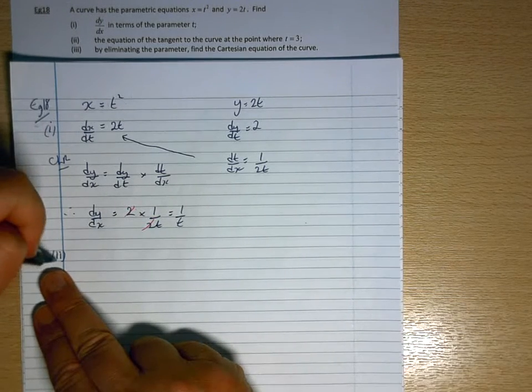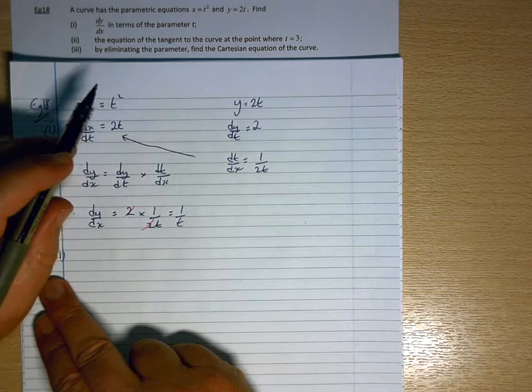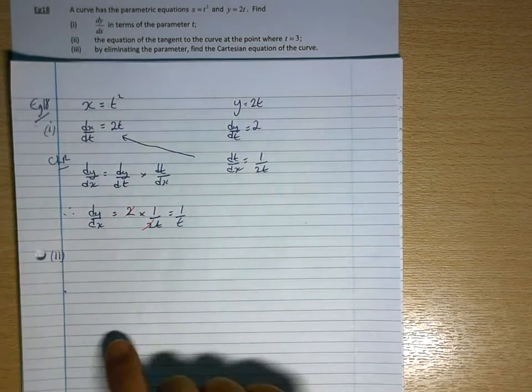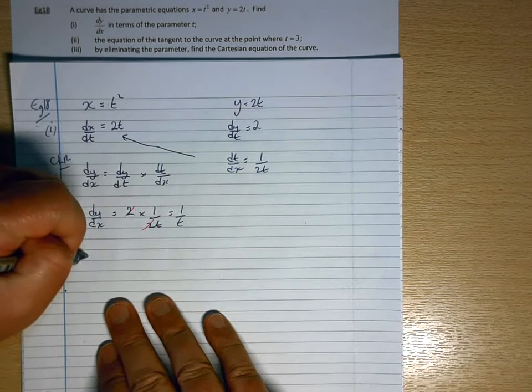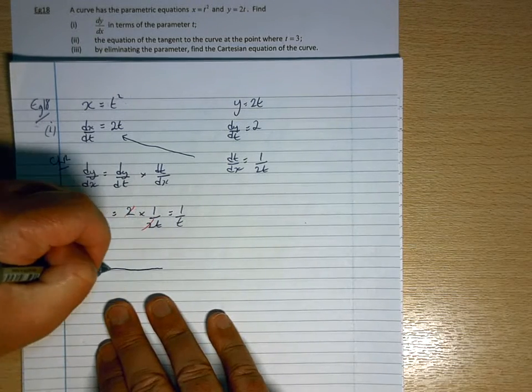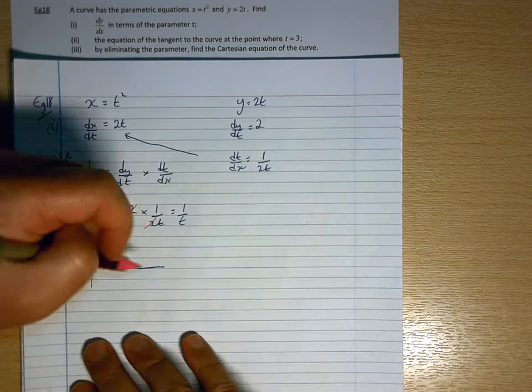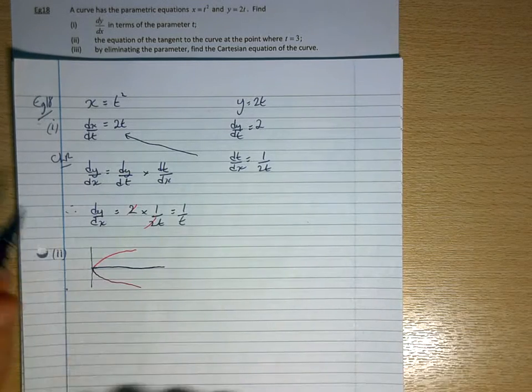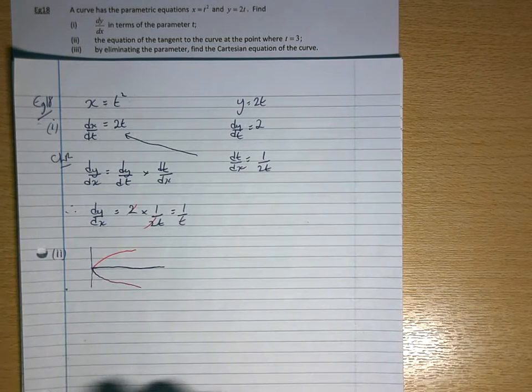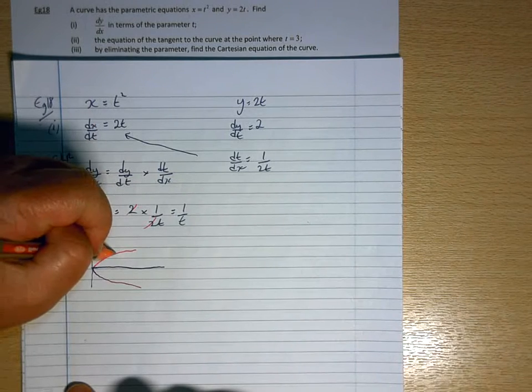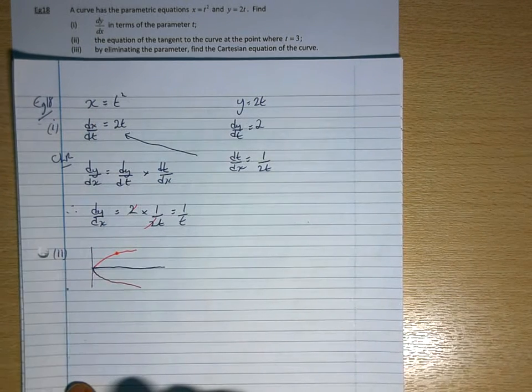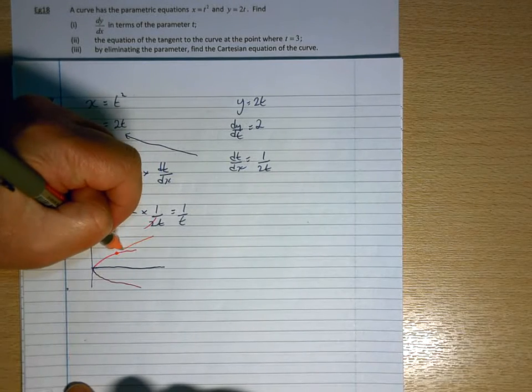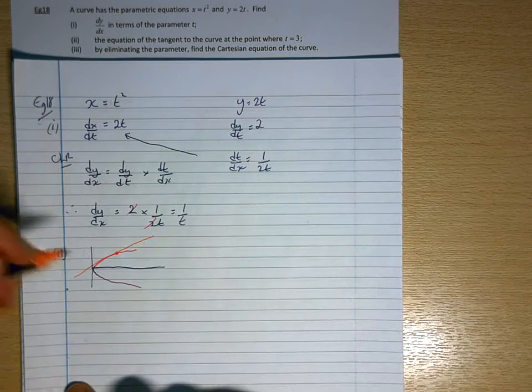Part 2. The equation of the tangent to the curve at the point where t equals 3. Right. So from the work that we did earlier, we know that what we've got here is a graph that's doing this. And at the point where t equals 3, we want to know the equation of the tangent.